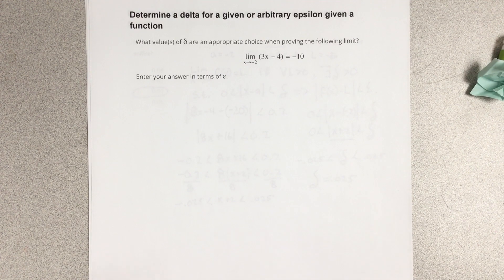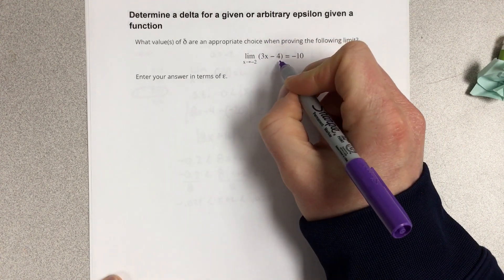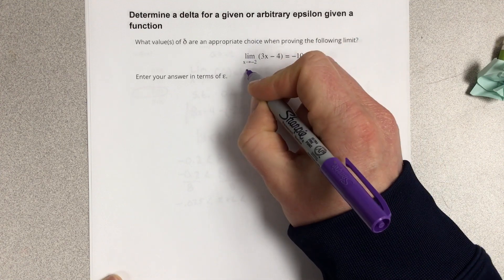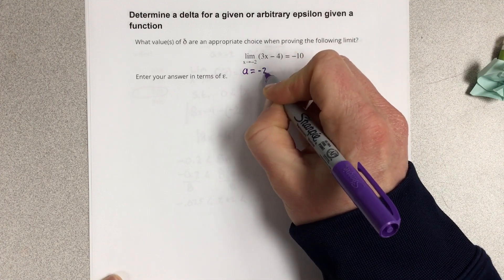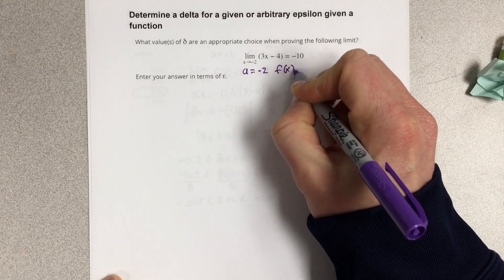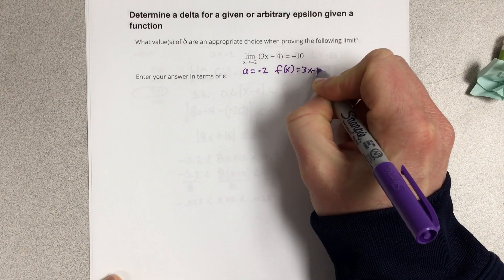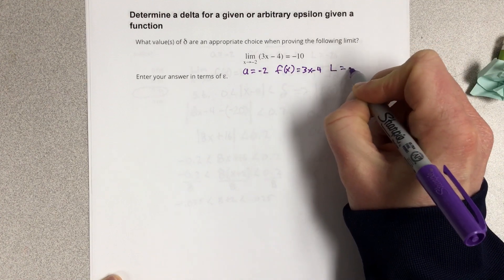So they give us the limit as x approaches negative 2 of 3x minus 4 is equal to negative 10. I'm going to say that a is negative 2, the function is 3x minus 4, and that the limiting value is negative 10.